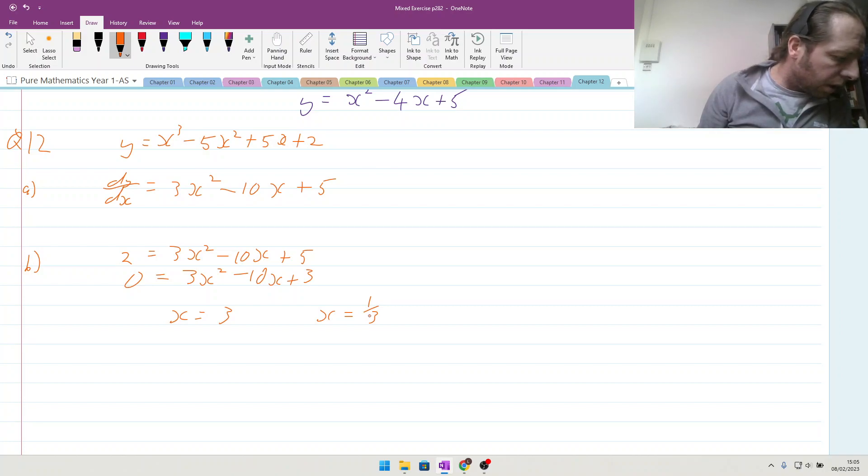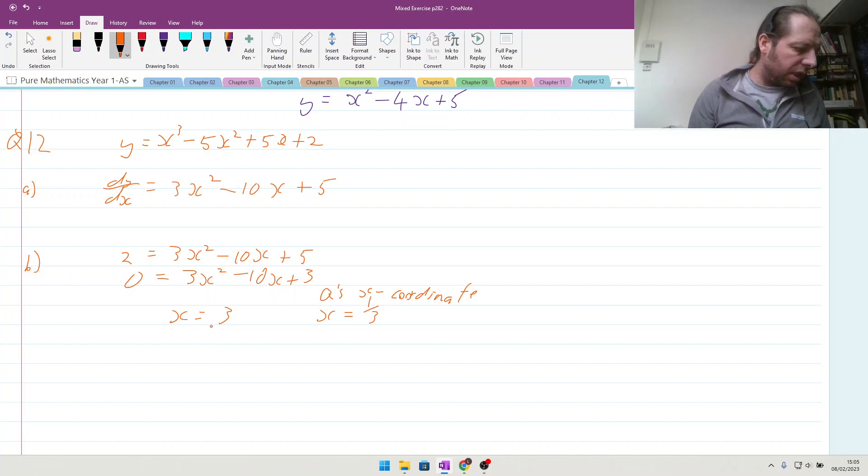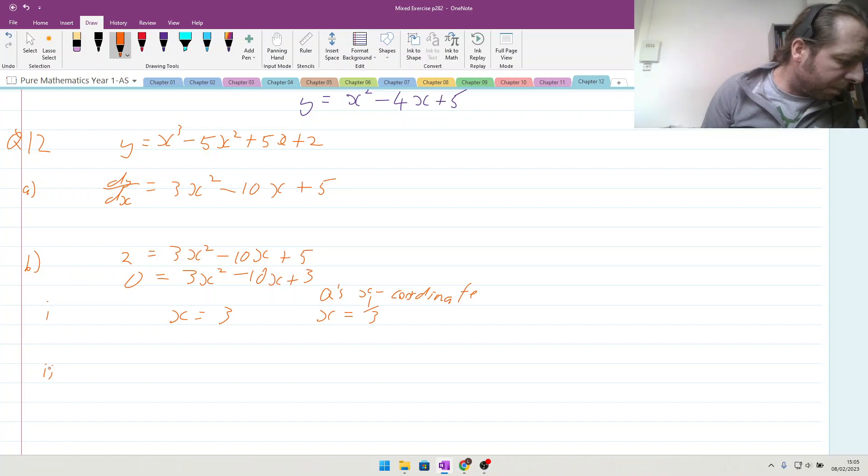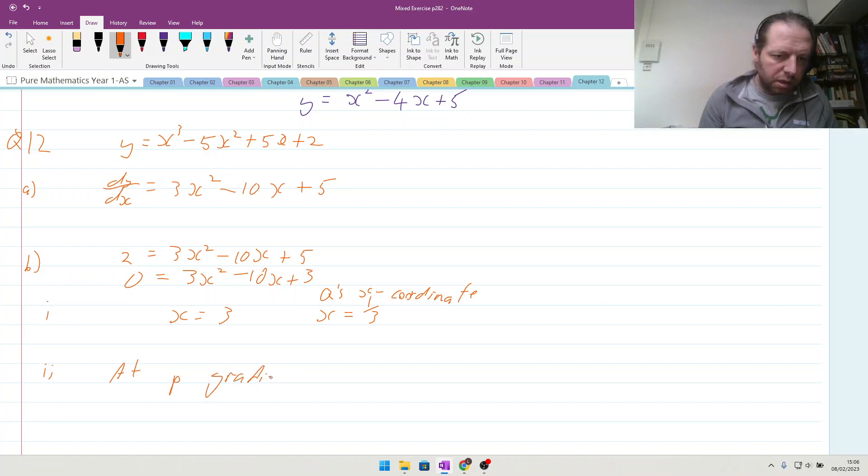The x-coordinate of P is 3, that's good. Find the equation for tangent to C at P, giving the answer in the form y equals mx plus c. So that was part i, find the equation of tangent to C at point P. At point P, the gradient is given to us in the question and it is 2.